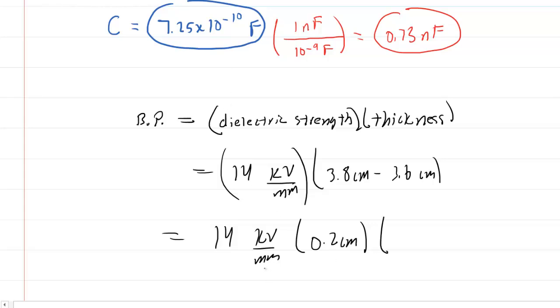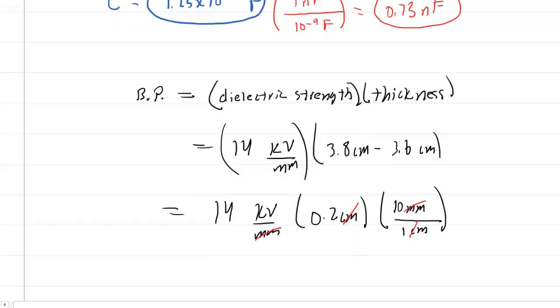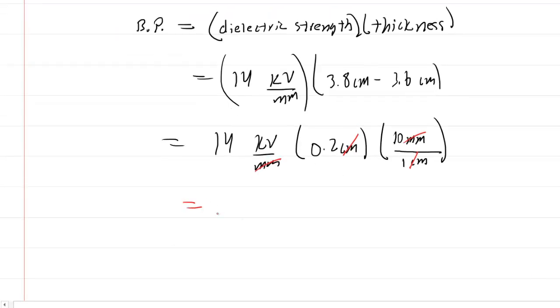But the units are inconsistent. We have millimeters and centimeters. We're going to have to convert the centimeters into millimeters. One centimeter is 10 millimeters. We multiply by this conversion factor so that the centimeters cancel and the millimeters cancel. When you punch this into your calculator, you're going to get a final answer of 28, and the unit here will be kilovolts. This would be the correct answer to part B.